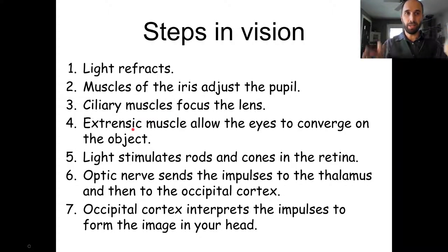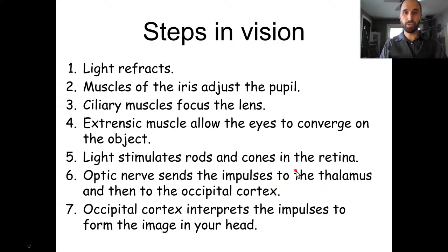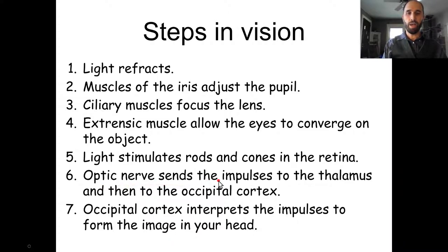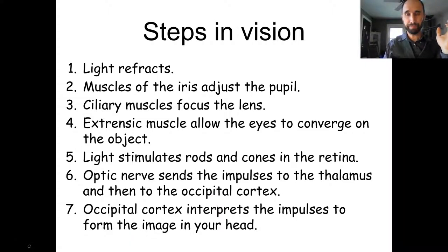The extrinsic muscles converge both eyes on the object, giving depth perception and clarity. Light hits the retina, stimulating rods and cones which create action potentials — receptors translate the light stimulus into the language of the brain. Those action potentials travel on the optic nerve to the thalamus, then to the occipital cortex where you interpret what you're looking at.